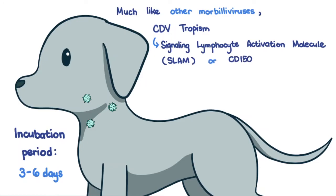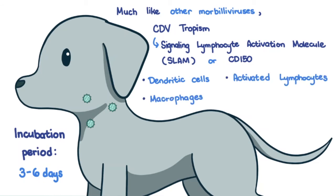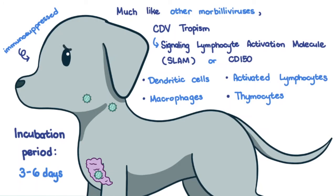These cells include dendritic cells, macrophages, activated lymphocytes, and thymocytes. Given that these cells are responsible for the immune response of the body, infection by the canine distemper virus results in an immunosuppressed state. Atrophy of the thymus is also a common lesion in many pups with canine distemper.